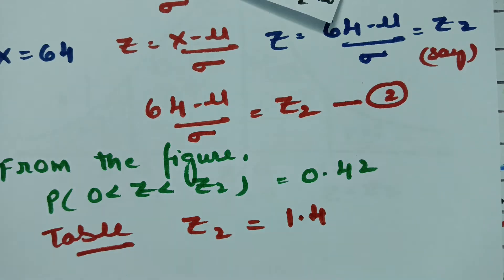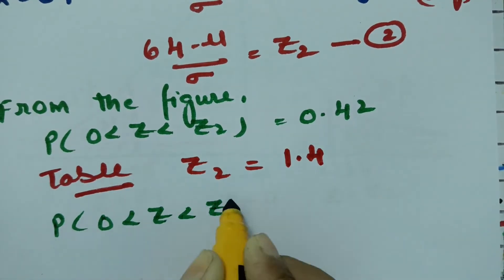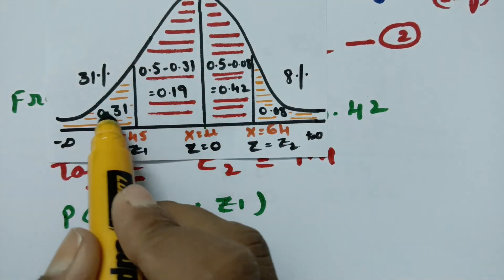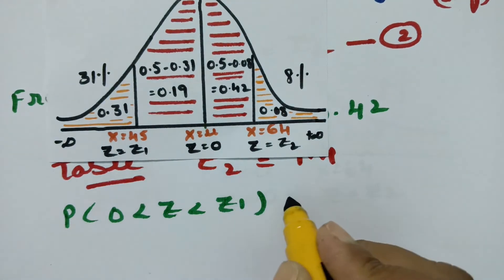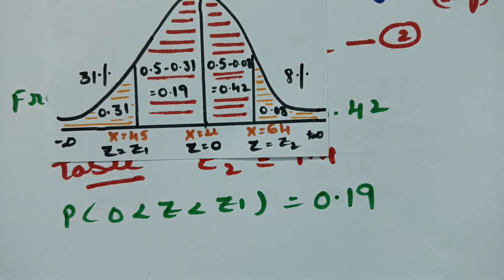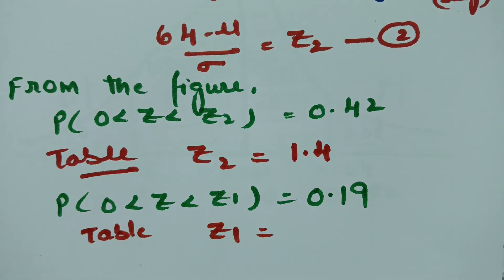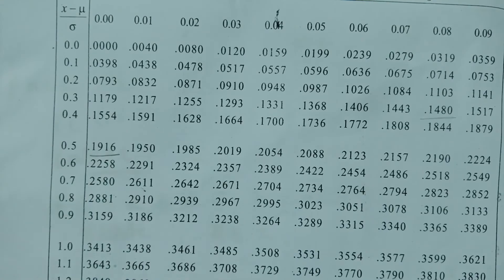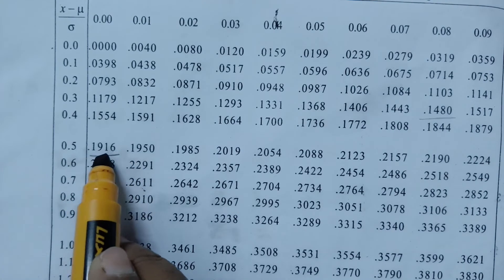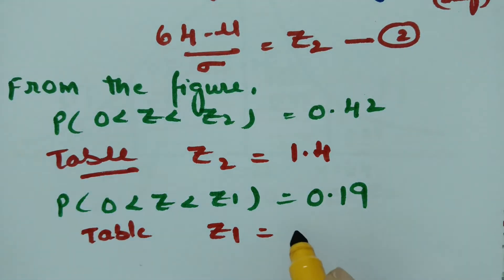From the figure, P(0 < z < z1) = 0.5 − 0.31 = 0.19. Using the table, we look up 0.19. The value 0.1900 gives the minimum difference, corresponding to z = 0.5. Therefore z1 = 0.5.